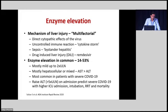Liver enzyme elevation is common in COVID-19, ranging from 14 to 53%, though more recent meta-analyses suggest the percentage is towards the lower end. Elevation is only mild — up to about two times the upper limit of normal in most patients — predominantly AST more than ALT. Liver derangement is most common in severe COVID-19, and ALT more than five times the upper limit of normal on admission predicted severe COVID-19 with higher rates of ICU admission, intubation, need for renal replacement therapy, and mortality.